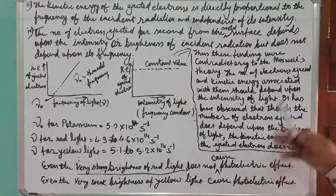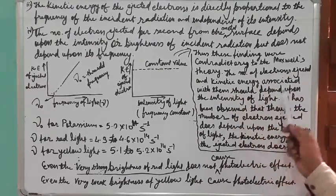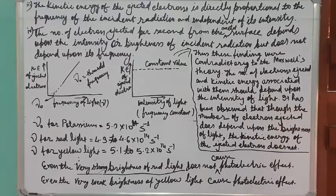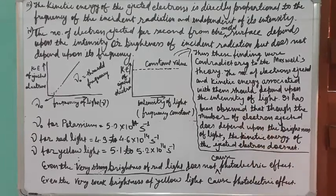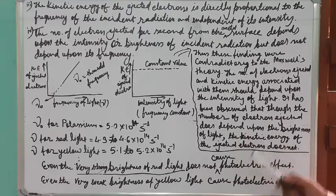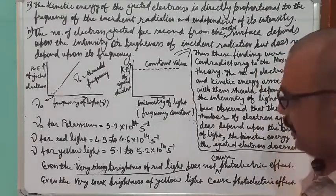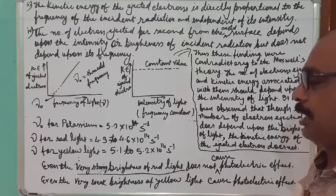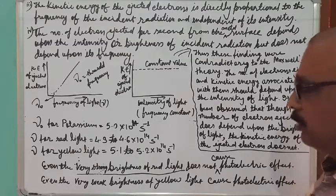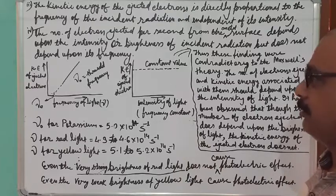A new theory — Planck's quantum theory — is needed to explain both black body radiation and the photoelectric effect, which we will study in the next lecture.